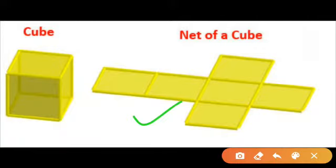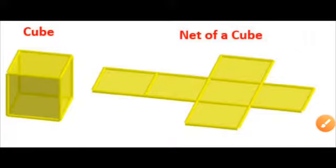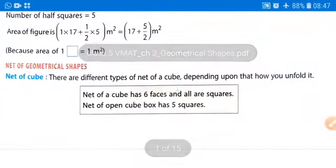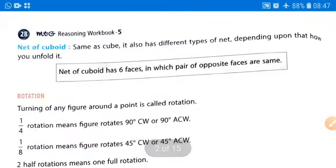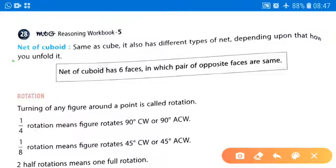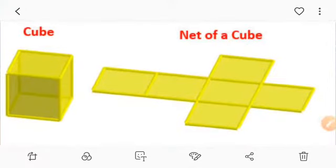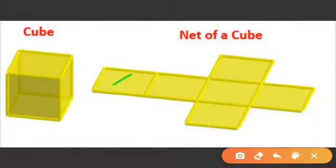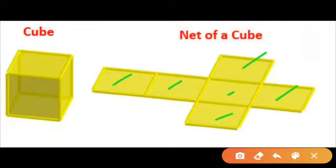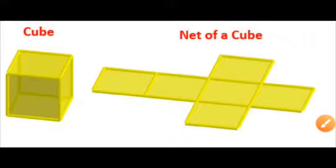The net of a cube gives us its unfolded form. Similarly, we have the net of a cuboid and different shapes like a pyramid. For a cube net, you will get one, two, three, four, five, six faces. In this way we find the net of a cube, rectangular pyramid, and other shapes.